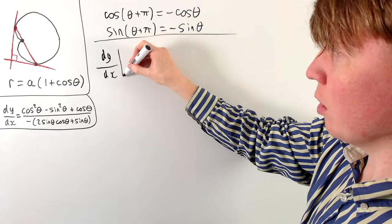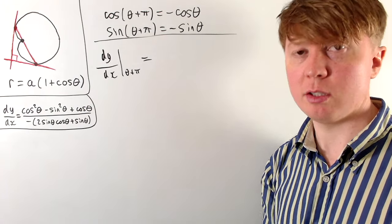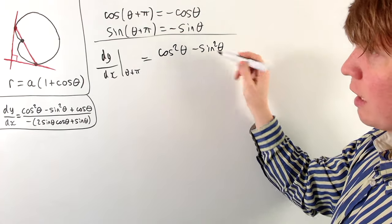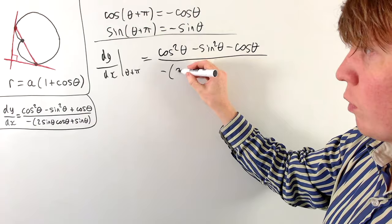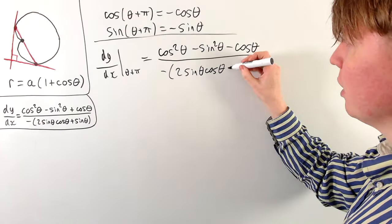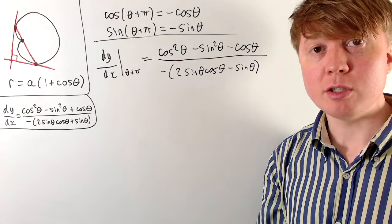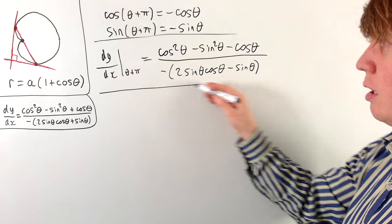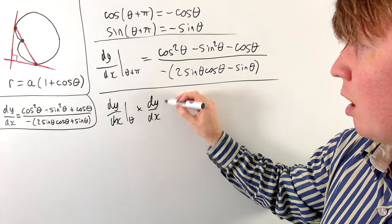So dy/dx at θ + π is (cos²θ − sin²θ − cos θ) over −(2 sin θ cos θ − sin θ). To check perpendicularity, we multiply the two gradients together and verify the product equals −1. Using shorthand c for cos θ and s for sin θ, the product becomes [(c² − s² + c)(c² − s² − c)] over [−(2sc + s) · −(2sc − s)].